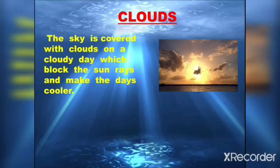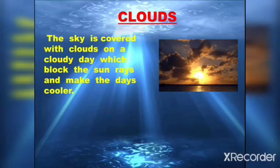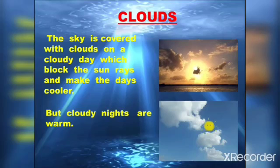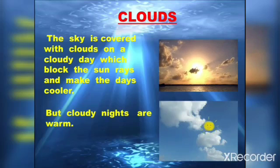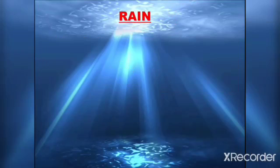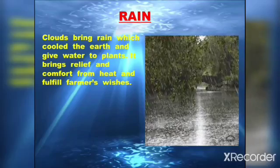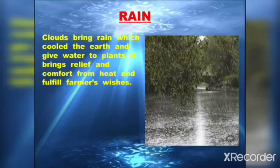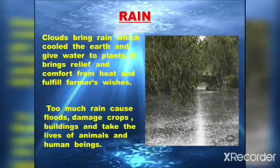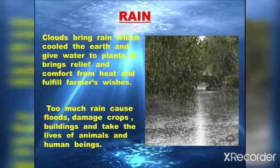The sky is covered with clouds on a cloudy day, and on these days sun rays cannot reach us, so cloudy days are cooler than sunny days. But cloudy nights are warmer because the clouds do not allow the heat of the earth to escape back into the atmosphere, that's why cloudy nights are warm. Clouds bring rain which cools the earth and gives water to plants. Rain brings relief and comfort from heat and fulfills farmers' wishes, but too much rain causes floods, which damage crops and buildings and can take the lives of animals and human beings.